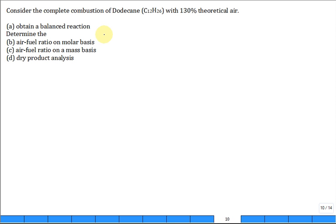When you have anything but 100% theoretical air and you're asked to do the combustion reaction equation, what you need to do is get to the 100% balanced equation. Write that down. Don't box it. It's not your answer, but you need to get to that step first.